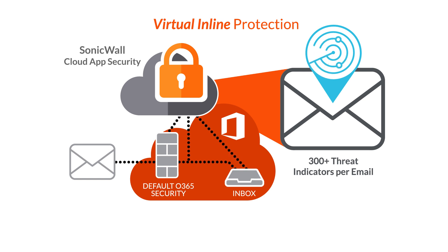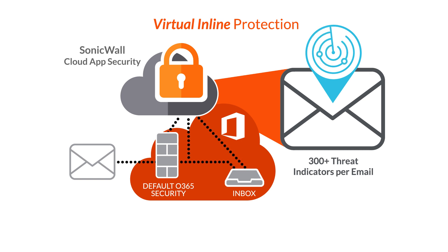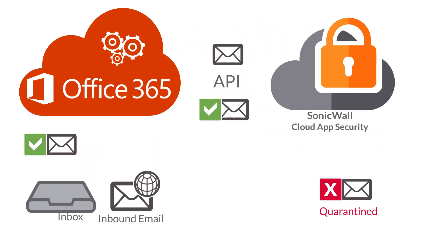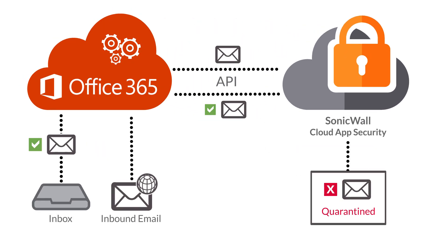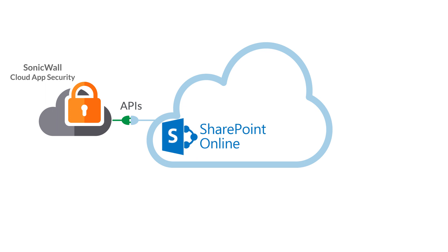Cloud App Security also includes attachment sandboxing, URL analysis, and protection against business email compromise and impersonation attacks, while continuously scanning inbound, outbound, and internal emails and enabling post-delivery retraction of emails.